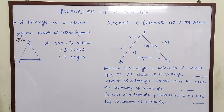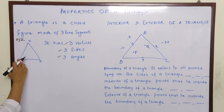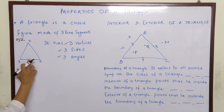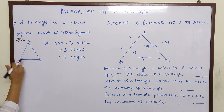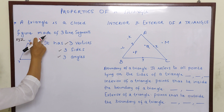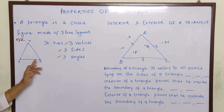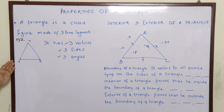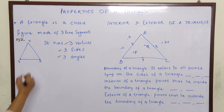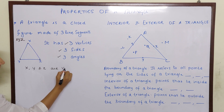Now what are vertices? When two lines come and join at a particular point, they form a vertex. Now if you see, XY is a line segment and YZ is a line segment. They both come and meet at point Y, so Y is a vertex. In the same way, XZ and YZ come and meet at Z, so Z is one vertex. And XY and ZX come and meet at X. So we can say X, Y and Z are the three vertices.